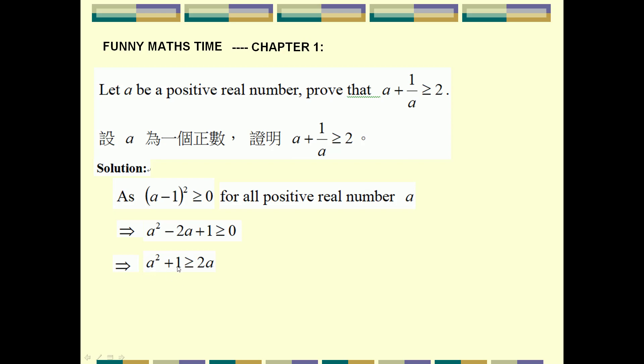This will become 1/a. It is our right hand side of our inequalities, and right hand side will become 2. Therefore we have a + 1/a ≥ 2. This is our proof.